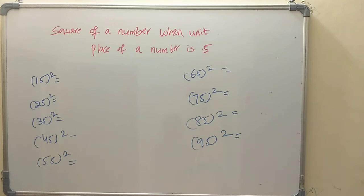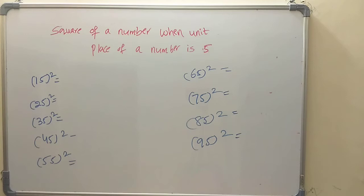The class is: square of a number when the unit place of a number is 5. Unit digits are 5. Examples include 15 square, 35 square, 45 square, 95 square.